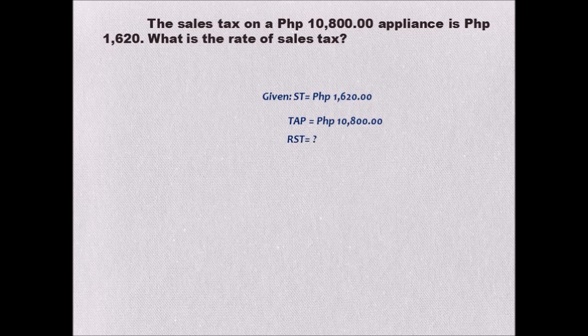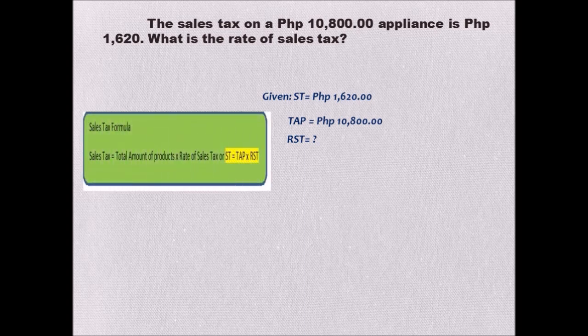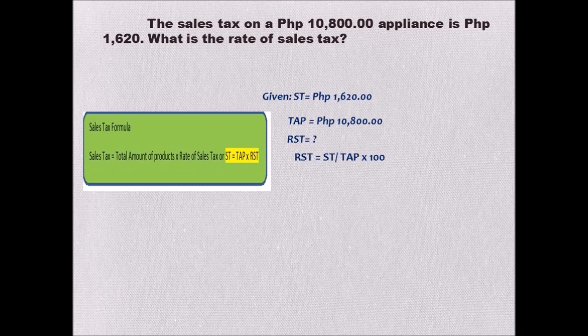Our unknown is the rate of the sales tax. To find the rate of sales tax, the formula is: rate of sales tax is equal to sales tax divided by the total amount of products, times 100. Substitute: 1,620 for the sales tax divided by the total amount of product which is 10,800, times 100.